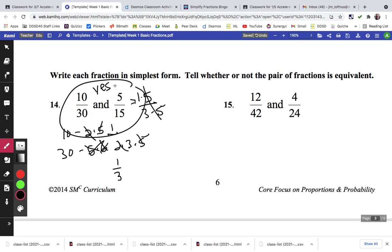And 12 forty-second. That's equal to 2 times 2 times 3. And this is equal to 2 times 3 times 7. The 2s and the 3s cancel out. So this is equal to 2 sevenths.